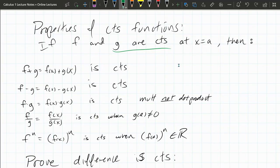We're now looking at properties of continuous functions. If f and g are continuous at x equals a, that means if we suppose we have two functions which are already continuous at x equals a, the limit equals the value. So if we already have two continuous functions, we'll look at properties.